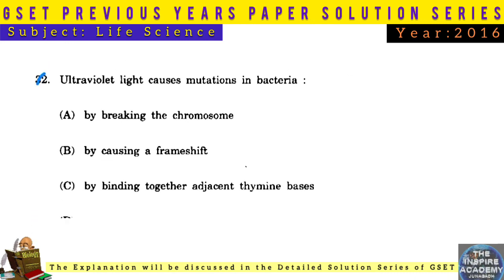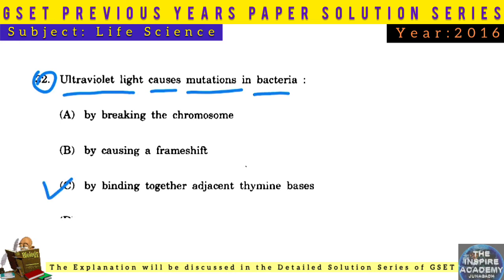Question No. 32: Ultraviolet light causes mutations in bacteria by binding together adjacent thymine bases.